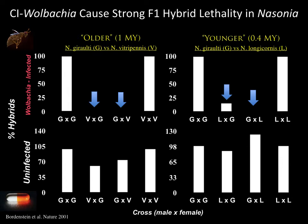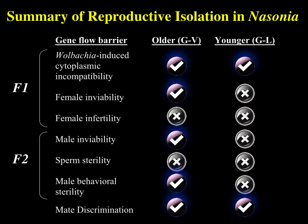Both the older and younger species pairs have different Wolbachia infections, contributing to a major F1 reproductive isolation barrier. The older species pair has a lot more reproductive isolation than the younger species pair, consistent with the expectation that greater genetic divergence correlates with greater reproductive isolation. In this case, the older species pair has more genetic divergence, hence more types of reproductive isolation.